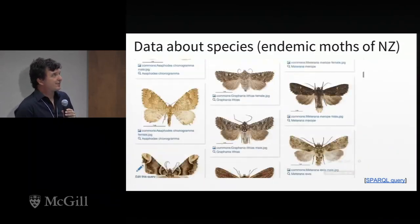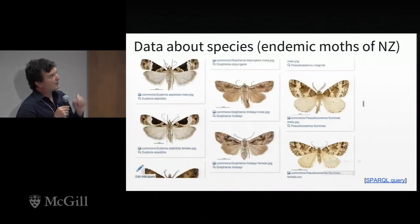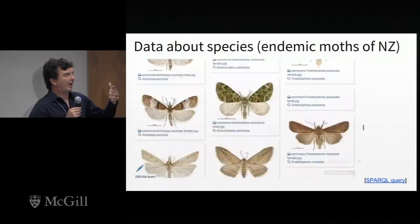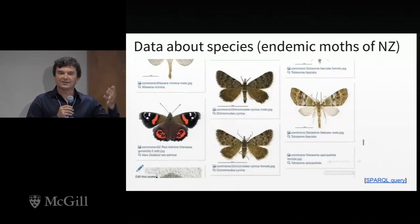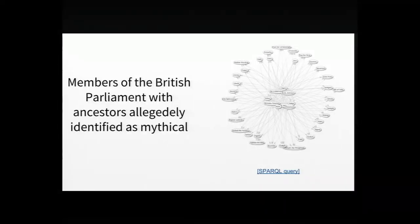We also have extensive data about species. This is a fantastic animation of the full list of endemic moths in New Zealand that you can query and retrieve with all the associated metadata. We also have more mundane queries — for instance, you can ask Wikidata for members of the current British Parliament with ancestors identified as mythical. If you disagree, you can look up and fix the references or statements using the query service.